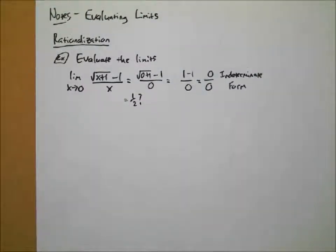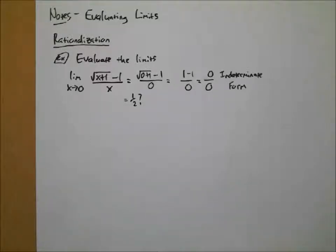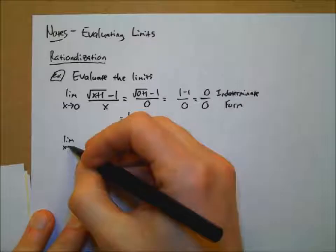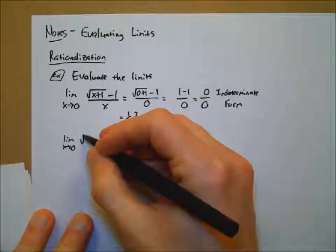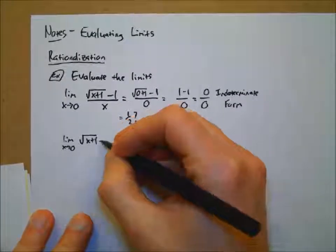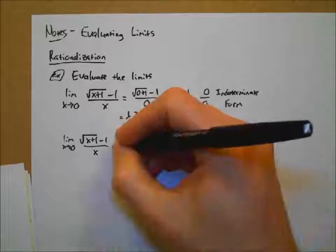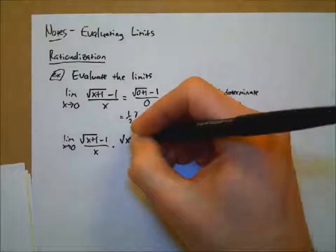Direct substitution yielded zero over zero. There's no clear way to factor this — it doesn't really look like something that factors. But the table seems to indicate it would go to one-half. So what can we do here? This is where we're going to be using that idea of rationalization. Let's rewrite it, and what we're going to do is take advantage of a difference of squares.